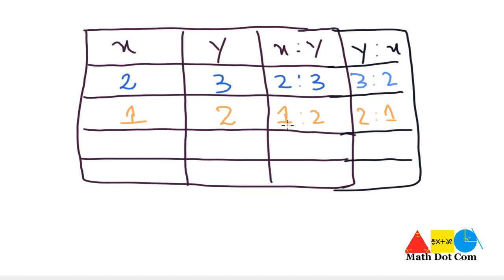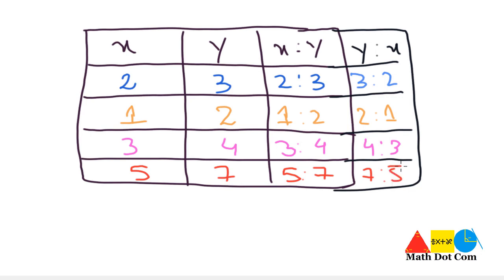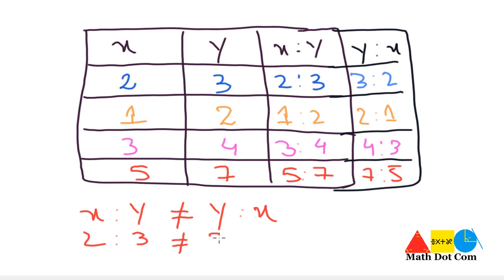If x = 3 and y = 4, then x ratio y is 3 ratio 4, and y ratio x is 4 ratio 3. If x = 5 and y = 7, then x ratio y is 5 ratio 7, and y ratio x is 7 ratio 5. It is clear that x ratio y is not equal to y ratio x — for example, 2 ratio 3 is not equal to 3 ratio 2, confirming that order matters.